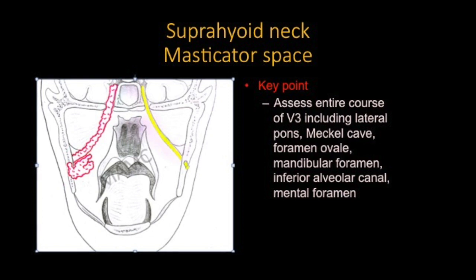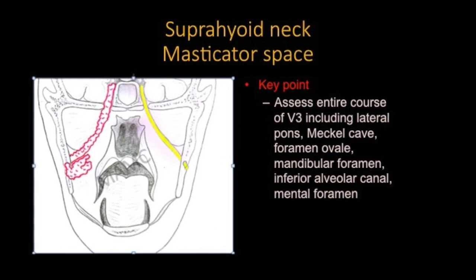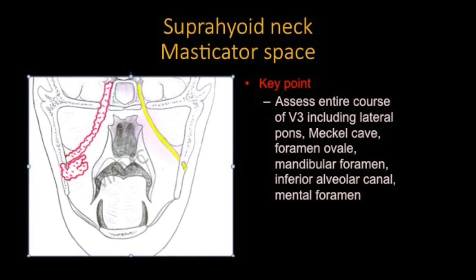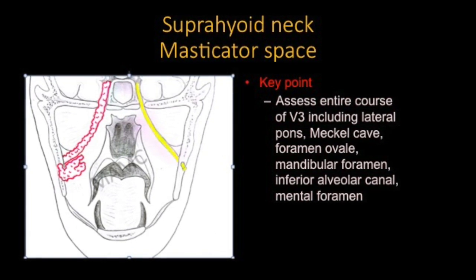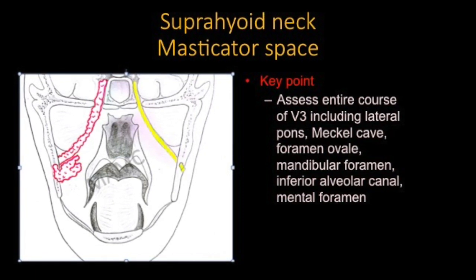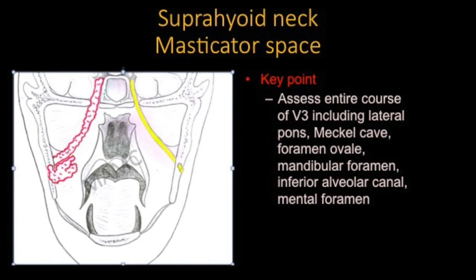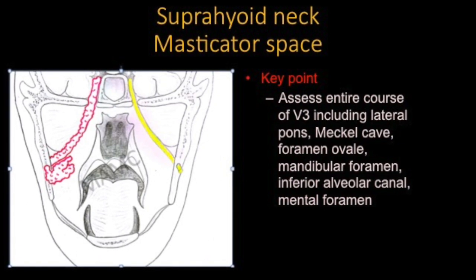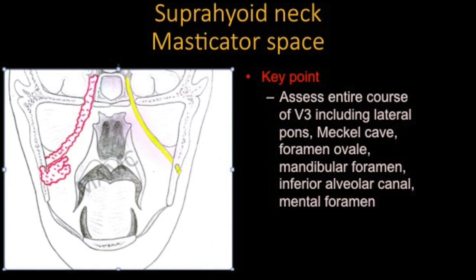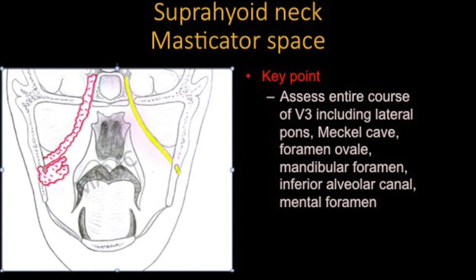Another thing to remember is the V3 nerve. Tumours in the masticator space can have perineural extension along the V3 nerve and can spread intracranially. When we see tumours here, we need to assess the entire course of V3, including its origin from the pons, Meckel's cave, the foramen ovale from where it exits, into the mandibular foramen, the inferior alveolar canal, and out of the mental foramen. The entire extent needs to be evaluated, as this is the main pathway of spread of masticator space disease intracranially.